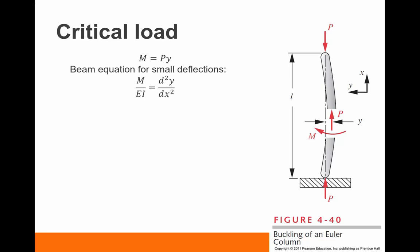The beam equation for small deflections looks like this. This is how we've been finding what deflections are. So M, which is a function of Y from above, is equal to EI times the second derivative of Y with respect to X.